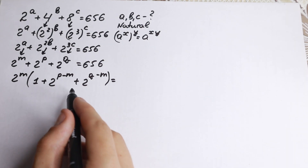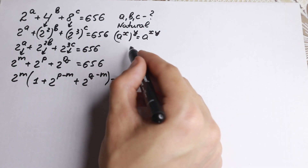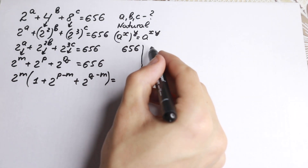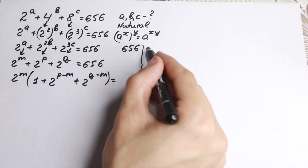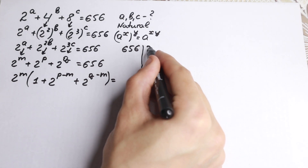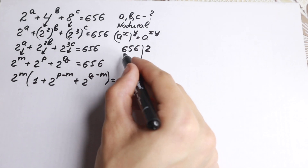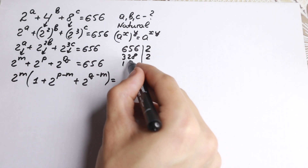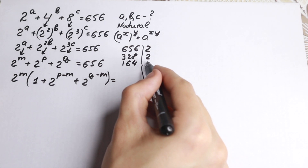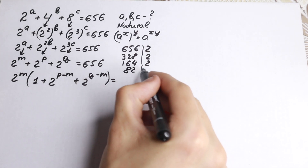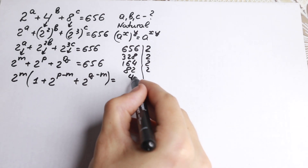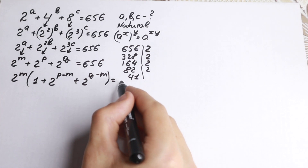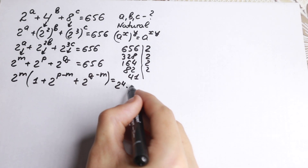Now, how can we write 656? Let's factor it. Dividing by 2 gives 328, dividing again gives 164, then 82, then 41. So we can write 656 as 2 to the fourth power times 41.